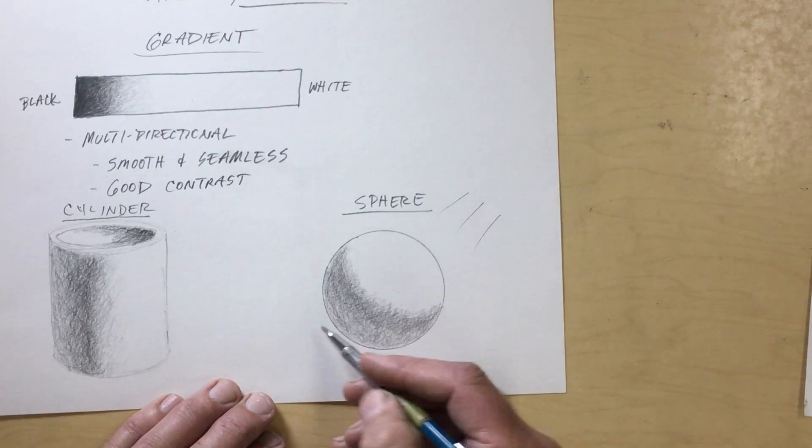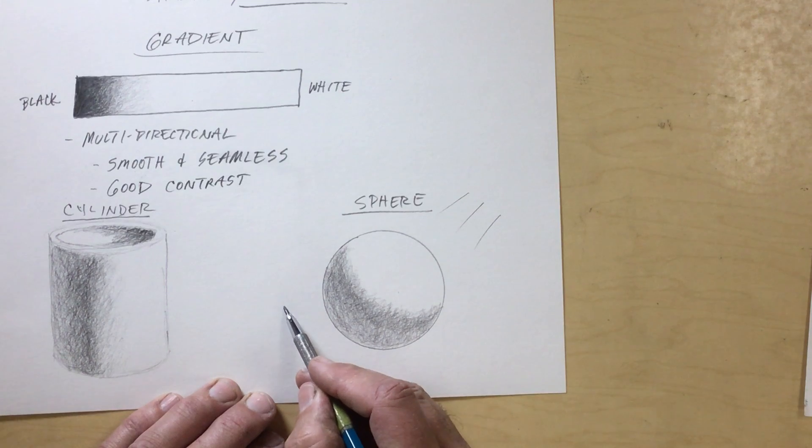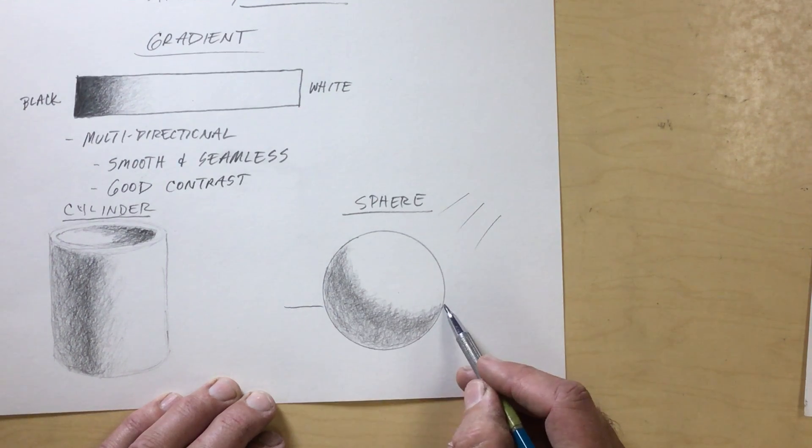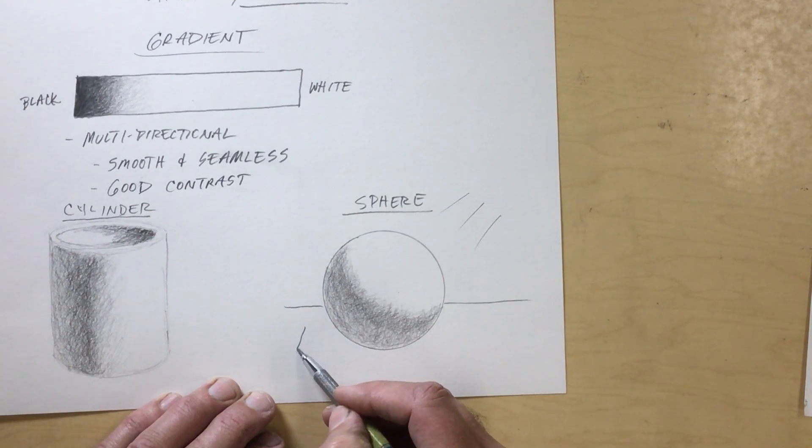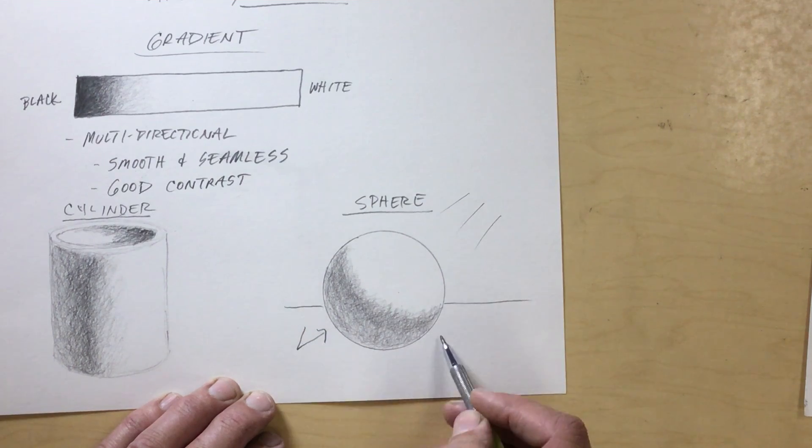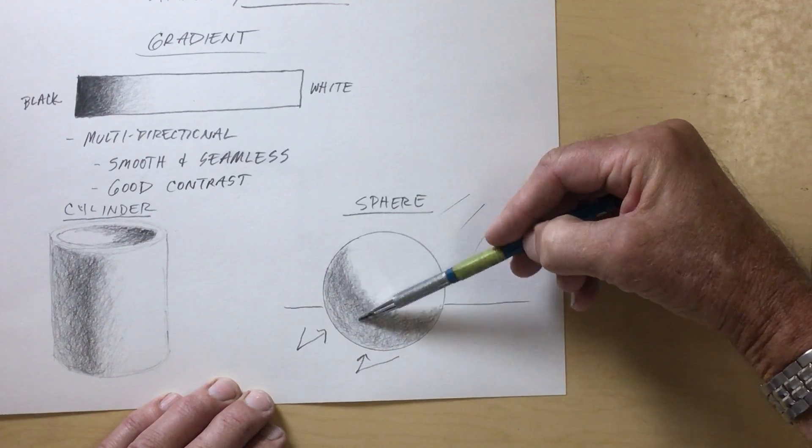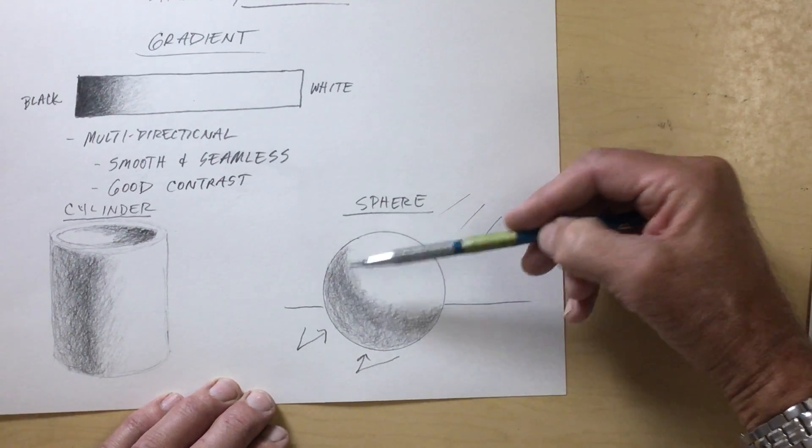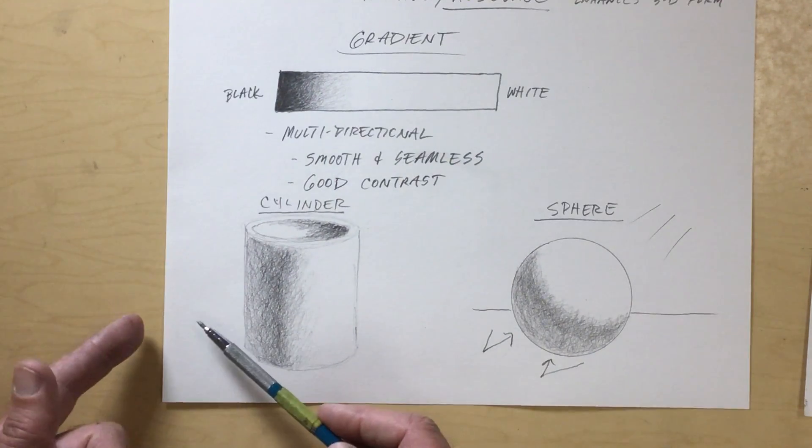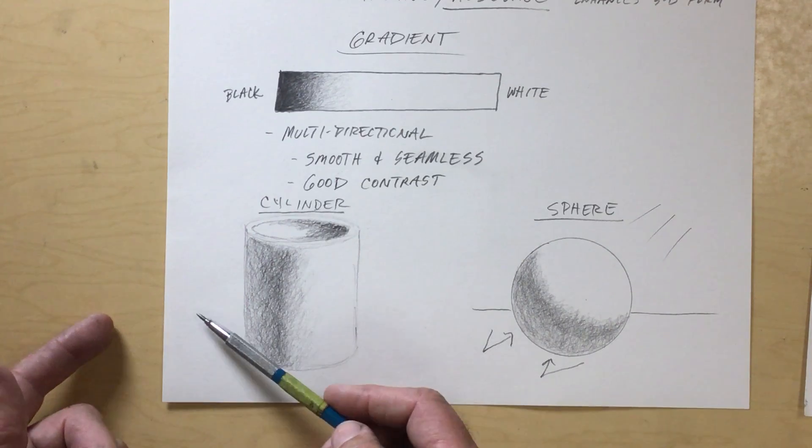And again, so we have our main light source coming here, and then say this is sitting on a tabletop—light bounces off the surface, comes in, bounces off the surface, and kind of backlights that. Now on our cylinder, there might be other objects next to this that the light would bounce off of and back like that.